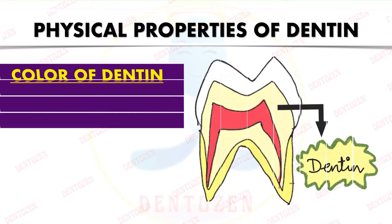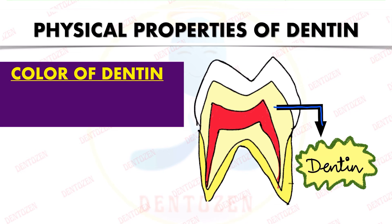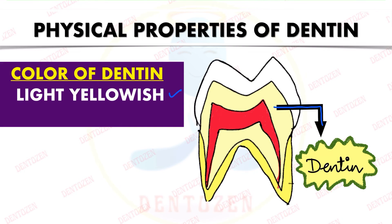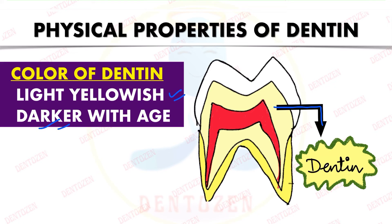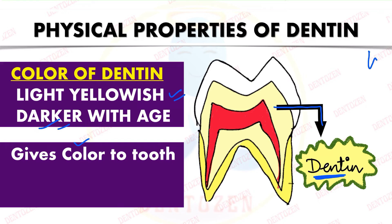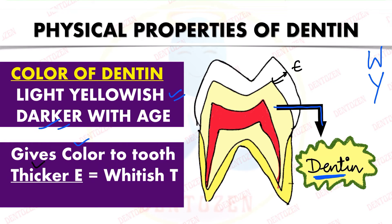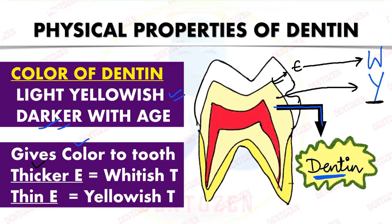The color of dentine is light yellowish, but it becomes darker with age. Dentine gives color to our teeth. Where enamel is thicker, we cannot see the color of the underlying dentine so the teeth appear white. Where enamel is thinner, the yellowish color of dentine shows through, making those areas of teeth appear yellowish.